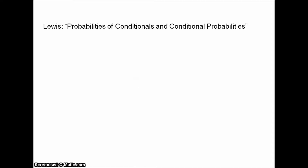Now we can think about Lewis's attack. Lewis presented two triviality results in his 'Probabilities of Conditionals and Conditional Probabilities.' Although logically the second implies the first, so there was really only one. A decade later he presented a third and a fourth. People have presented different versions of Lewis's results; I'm going to explain the version given in Bennett's book, which apparently comes from Simon Blackburn. Firstly, we need some results from probability logic.